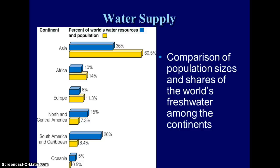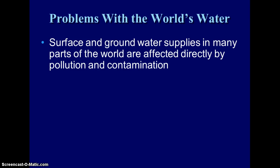If we look at where the water resources are compared to the world's population, you can see it's not balanced. In North and Central America, we have 15 percent of the world's water resources and only 7.3 percent of the population. Whereas when you look at Africa and Asia, where most of our world's population growth is occurring, they have a smaller percentage of the world's water supply compared to their population.